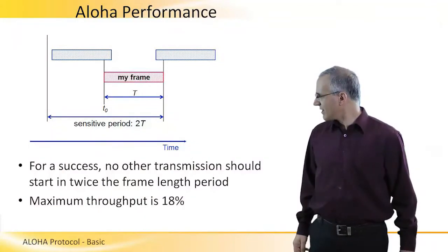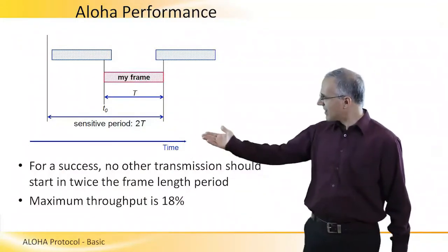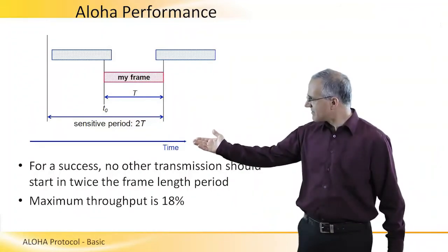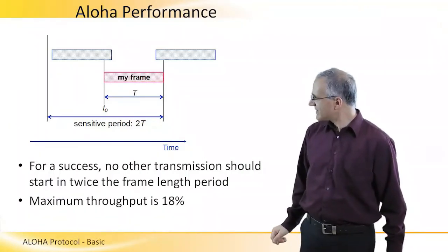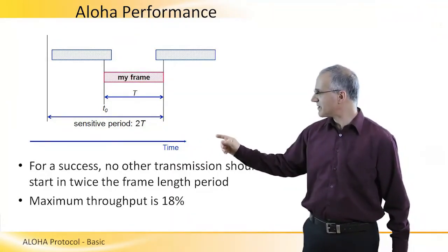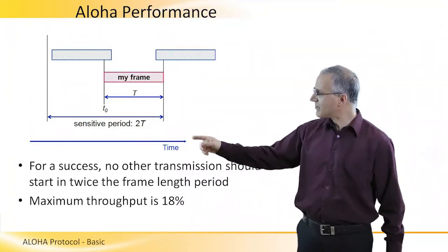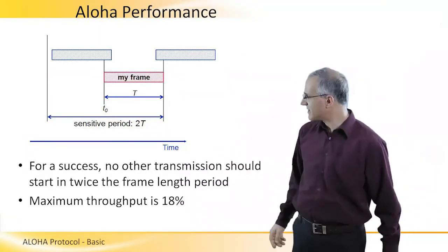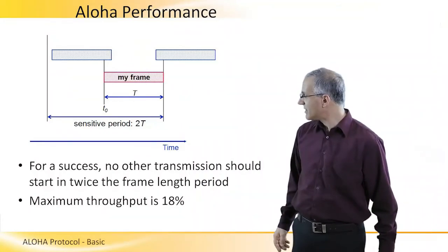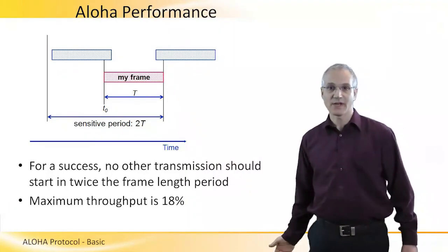So think of constant size frames. All frames are size T. So if my red frame is transmitted starting at time T0, it will be successful if nobody is going to transmit while I'm transmitting, but also if nobody is going to start transmitting up to T time units before I started transmitting, because then I will collide with the tail of its transmission. So we have a sensitive period of around 2T times.